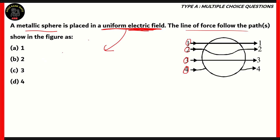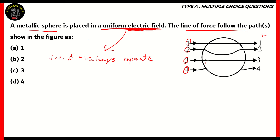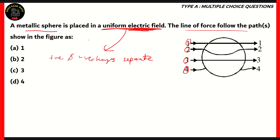In a uniform electric field, when any object is placed in it, positive and negative charges separate. The electric field goes from positive to negative. The negative charge accumulates on the left-hand side and the positive charge accumulates on the right-hand side, so the electric field flows from positive to negative.